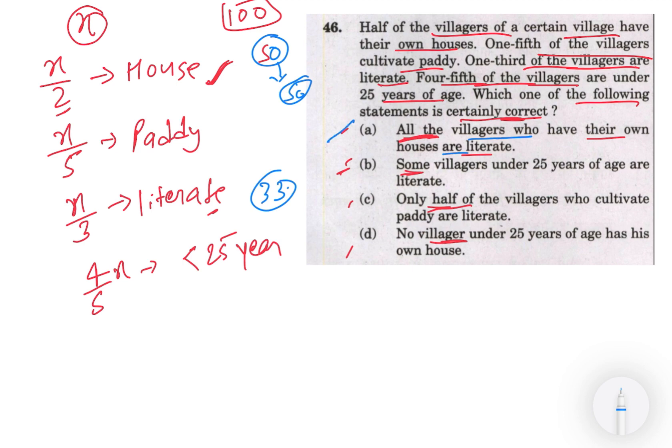Second statement dekhte - some villagers under 25 year of age are literate. So 25 year of age me kitna total log hai? 4 by 5 of x, matlab agar x ko 100 lete hai toh 4 by 5 matlab 80 villagers jo hai woh aapka 25 year se kam meh aajate hai. Aur literate meh hum kitna dekh rahe hai - 33 hai. Toh 100 meh 33 hamara agar maan ke chalte hai, ki jo yeh 20 villagers ho jayenge hamara greater than 25 year.